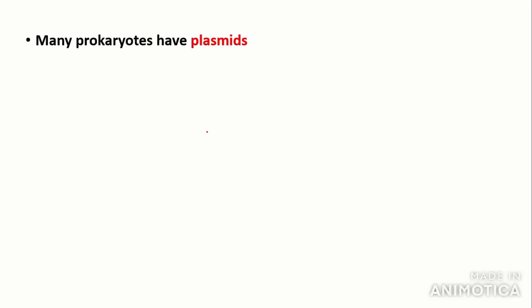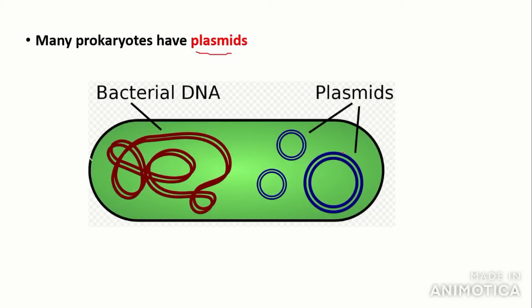Many prokaryotes have what we call plasmids. Plasmids are extra circular pieces of DNA that are different from the main bacterial DNA. The function of these plasmids is to provide extra genetic material, which is useful in gene technologies such as transformations, as they contain antibiotic resistance genes. You don't need to know a lot about the functions of plasmids at this point in the course; you just need to be aware that prokaryotes have these plasmids.